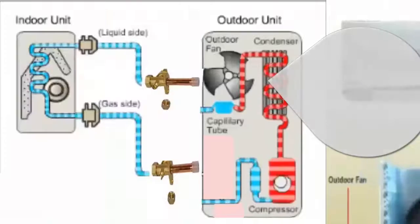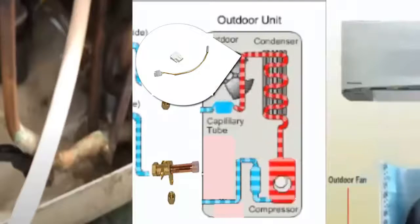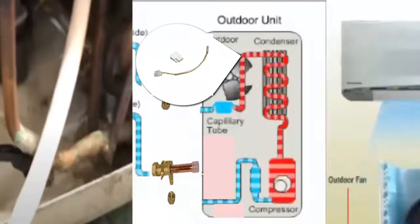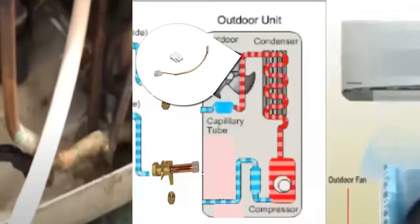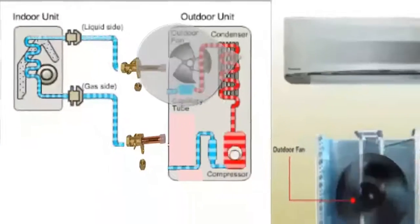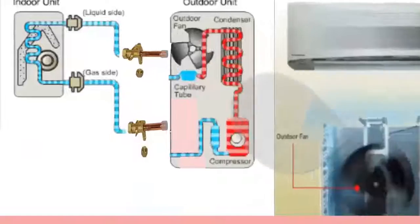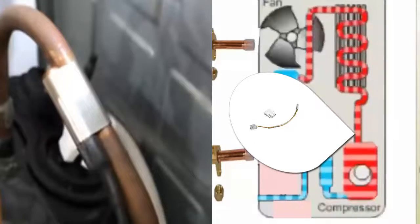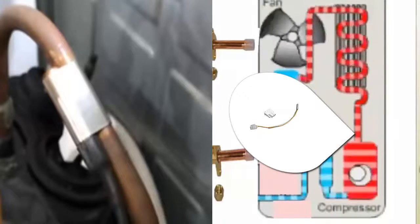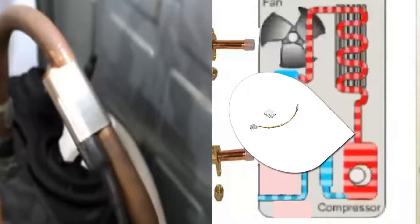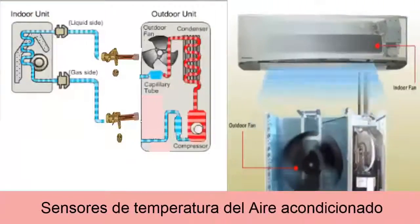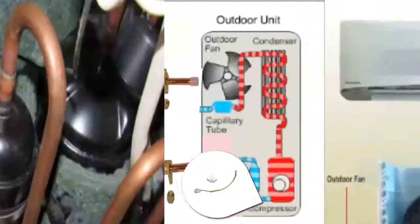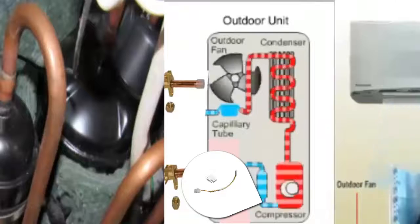The Temperature Sensor at the condenser outlet measures the temperature of the liquid refrigerant at the condenser outlet to calculate sub-cooling. The Compressor Discharge Sensor measures the refrigerant temperature immediately at the compressor discharge. The Refrigerant Temperature Sensor at the compressor suction measures the refrigerant temperature to control overheating.